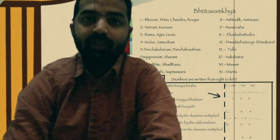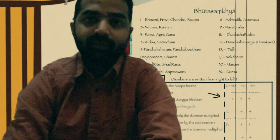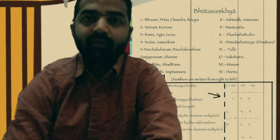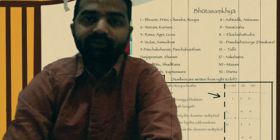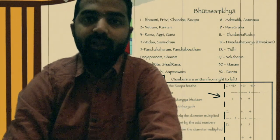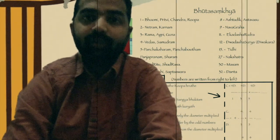Navagraha — Graha — planets represent number 9. Ekadasha Rudra — we know we have got 11 Rudras. So, Rudras — Mahadeva, Shankara, etc. — represent number 11.